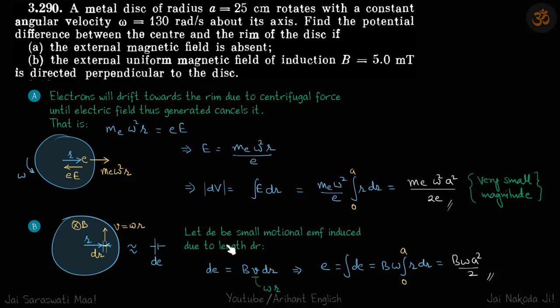Let de be the small emf induced due to the length dr and it's traveling with velocity omega*r. We have velocity, we have length, we have magnetic field. So emf induced is B*v*dr. v is omega*r. This gives the value of small de.